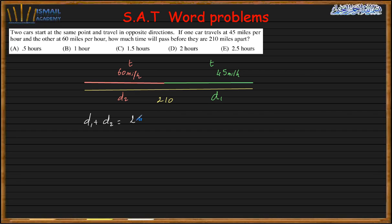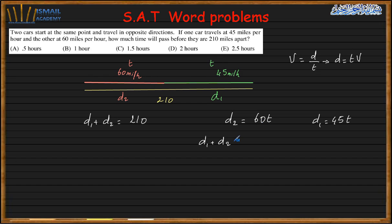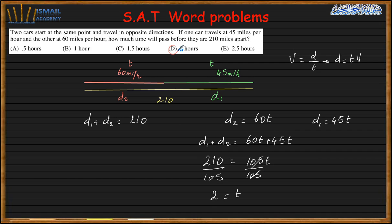So d1 is 40T and d2 is 60T. Then d1 plus d2 gives us 40T plus 60T, which equals 100T. Setting that equal to 210, we solve: 100T equals 210, so T equals 2.1 hours.